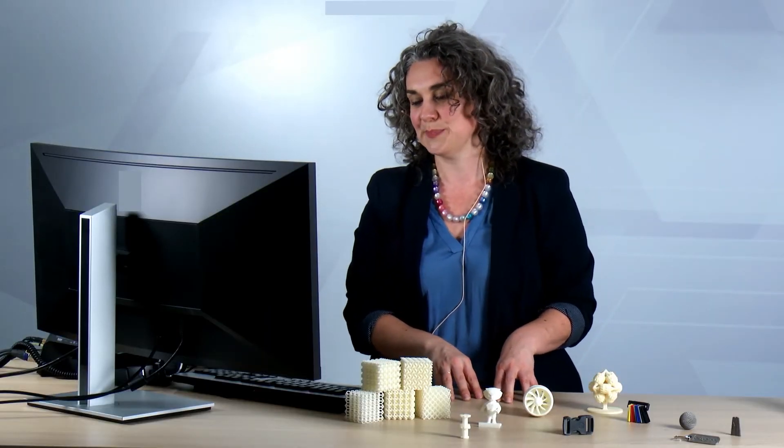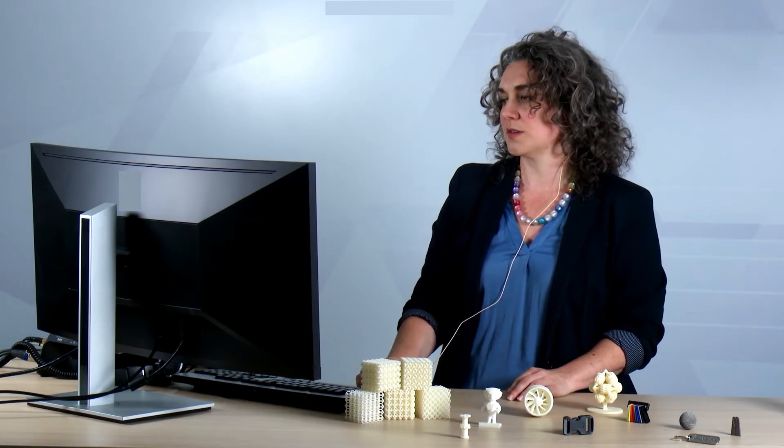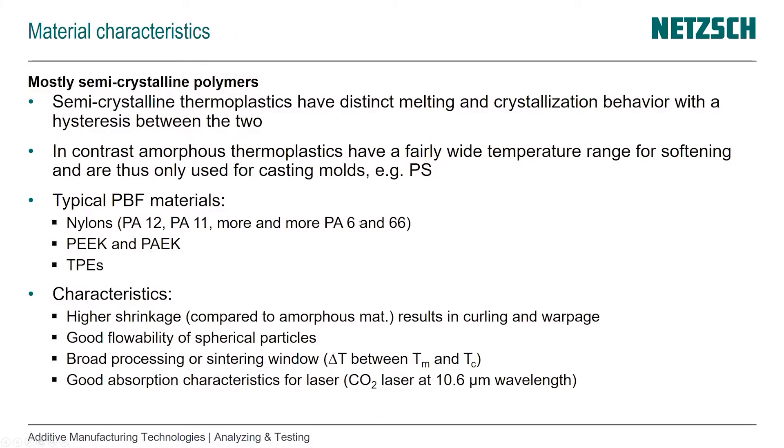Nylons. The first was nylon 12, which was the only one for a long time. Then nylon 11, which is more ductile, and we see more and more other materials. For example, huge efforts are being put into nylon 6 and nylon 66, which are typical technical thermoplastics already used in the polymer plastics industry.